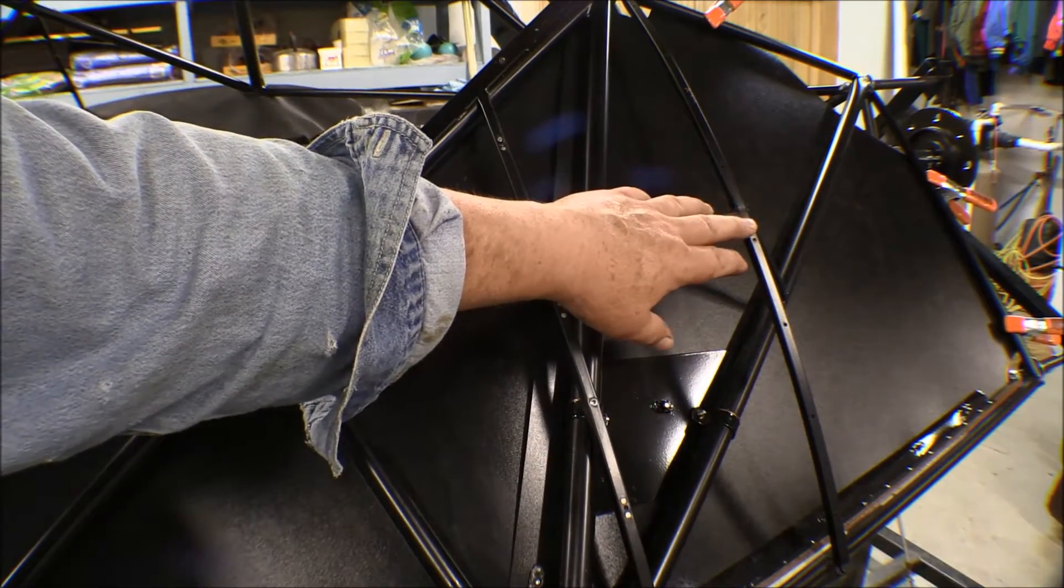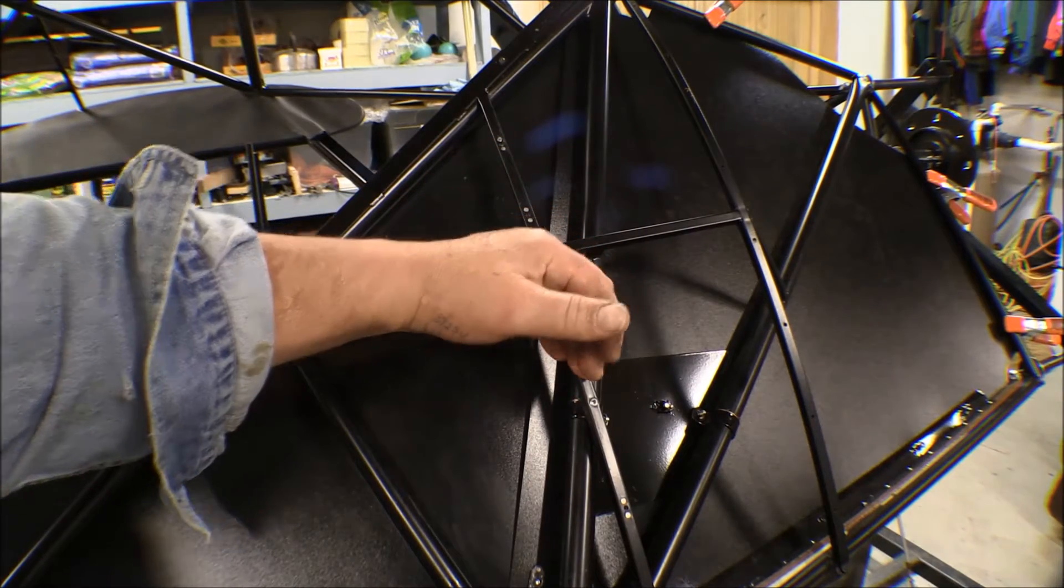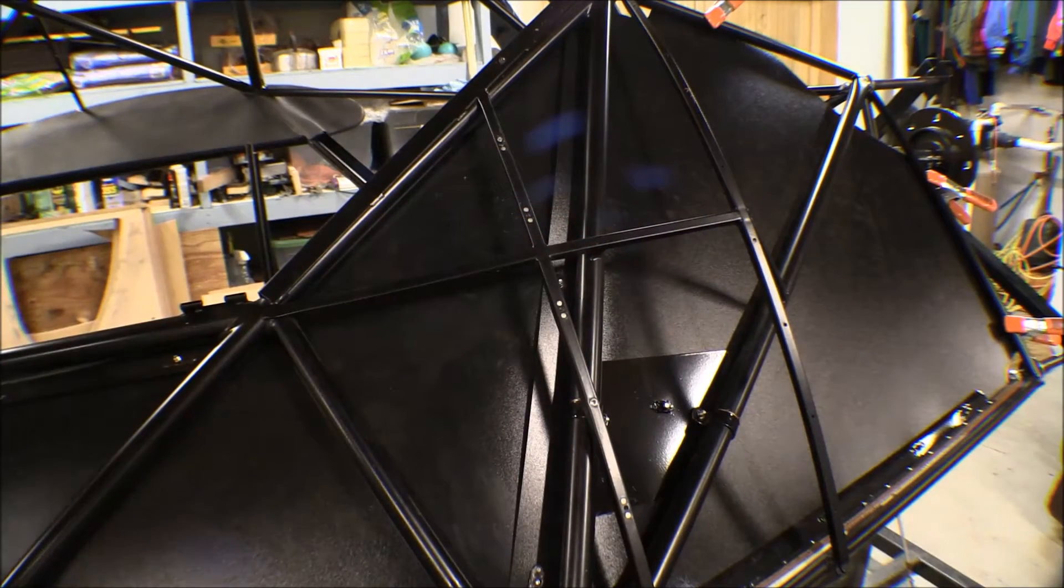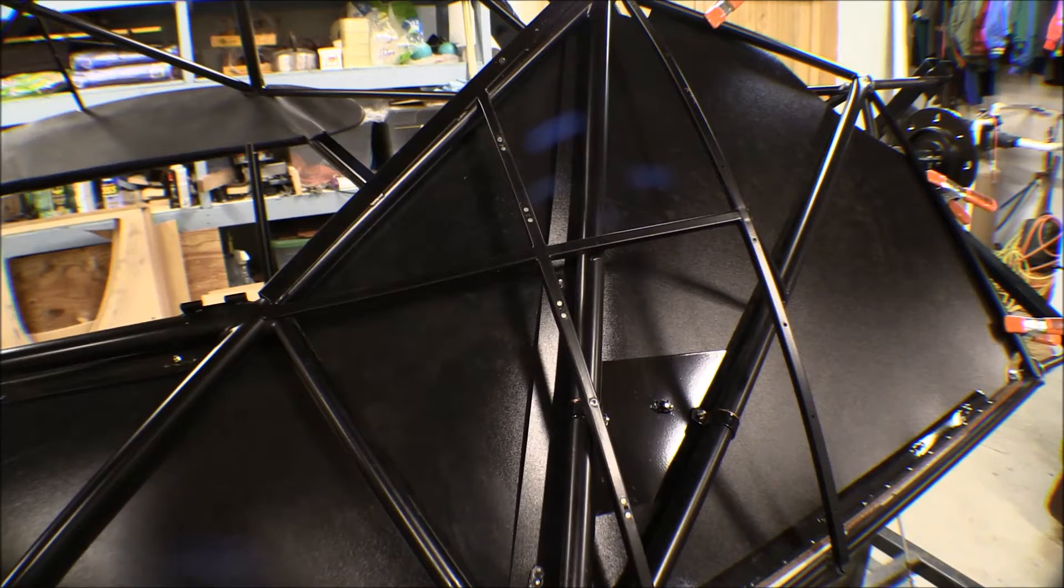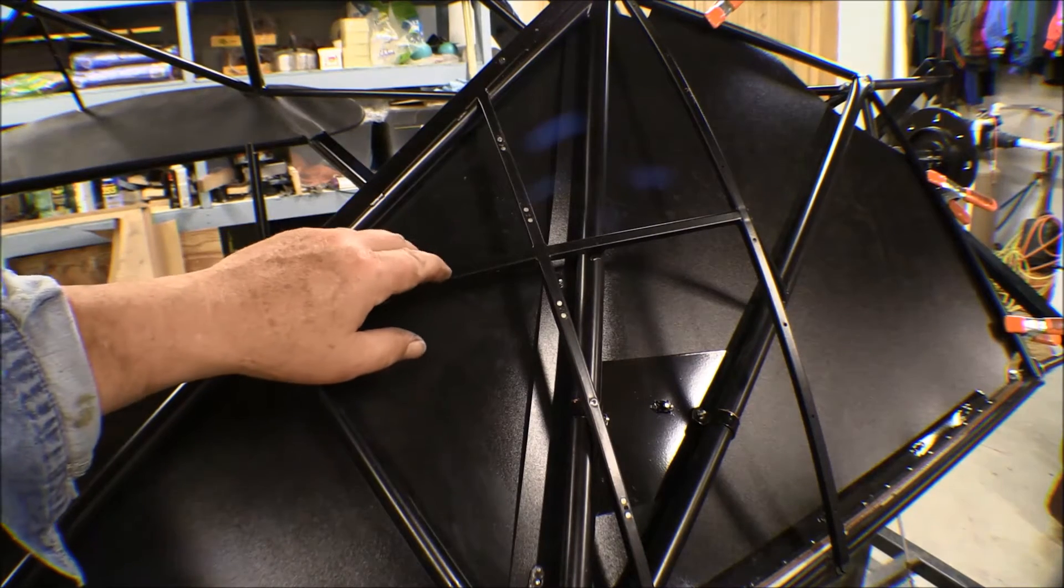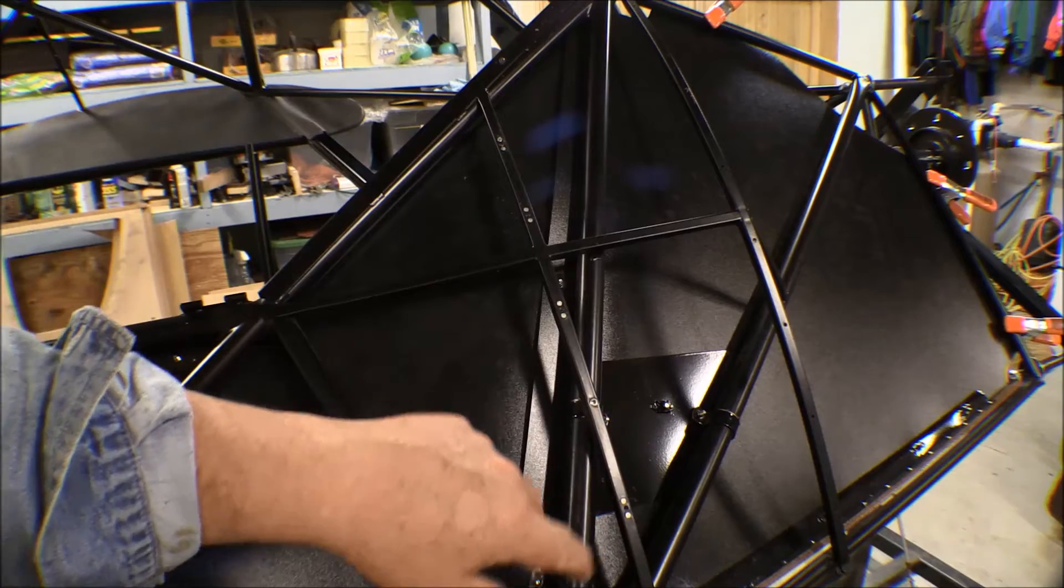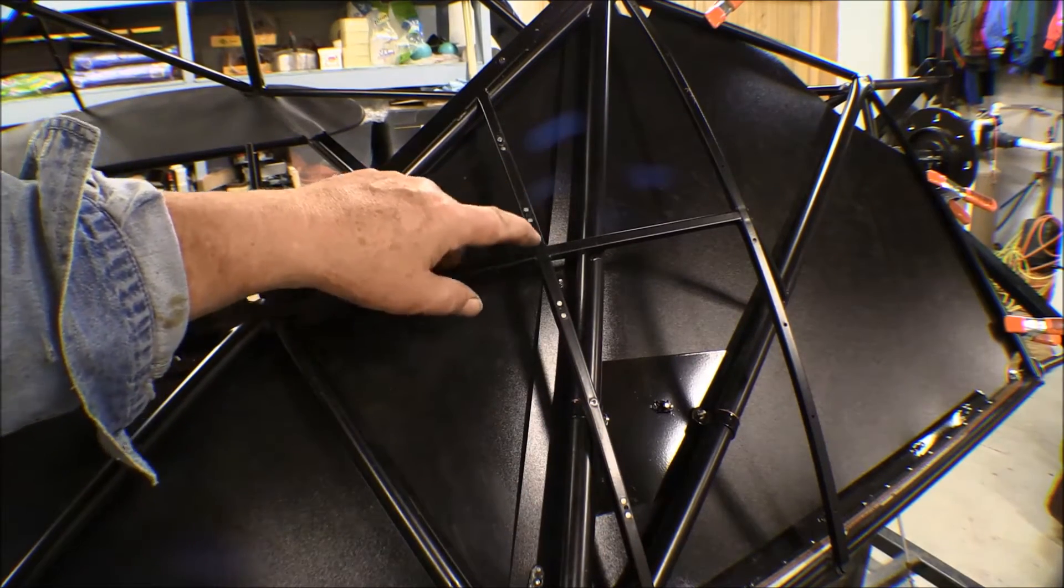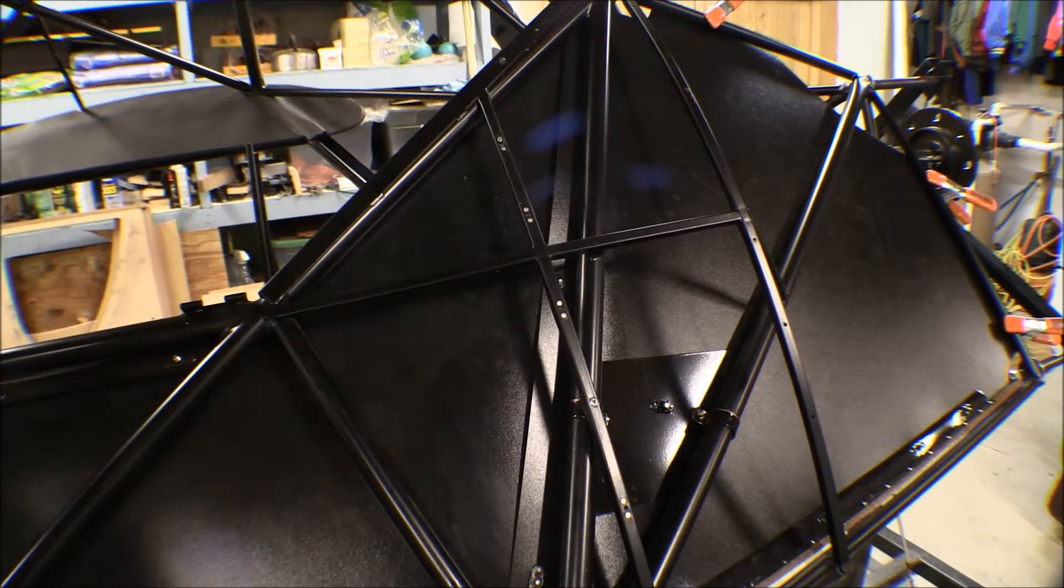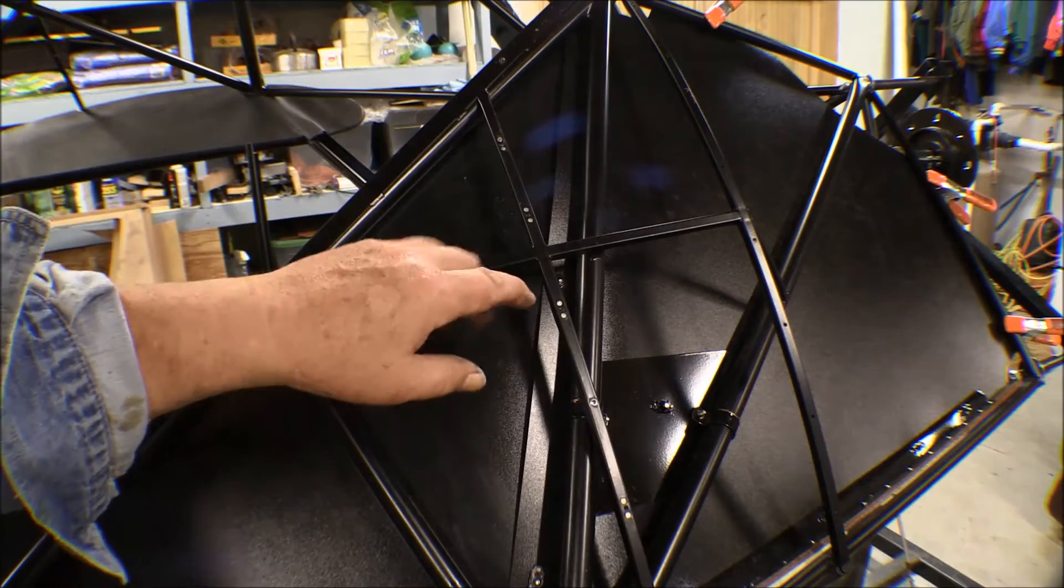The boot cowl comes back to here and then there's a secondary piece that comes back further. On the other airplane, everything is put on with sheet metal screws and I don't like them because they wind up hogging the holes out. So I was going to put nut plates in and that's what I did.